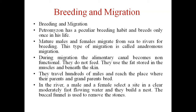When we talk about breeding and migration, Petromyzon has a peculiar breeding habit and breeds only once in its life. Mature males and females migrate from the sea to rivers for breeding. This type of migration is called anadromous migration — from sea to fresh water. When migration occurs from river to sea, it is called catadromous migration.